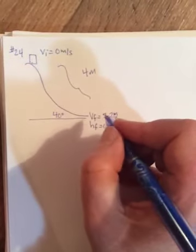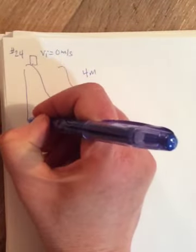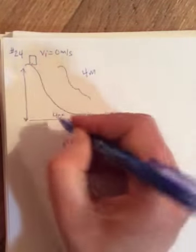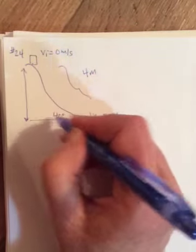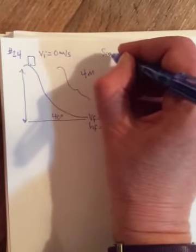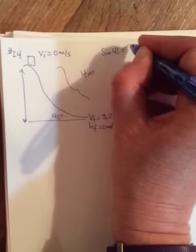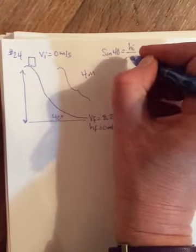And it wants to know what was the force of friction. So the first thing you have to do is find this height. And you can find this height using trig, right? Because you know the hypotenuse, and you know the angle, and you can find the opposite side. So it will be sin 40 is equal to the height, which is the height initial, over 4 meters.